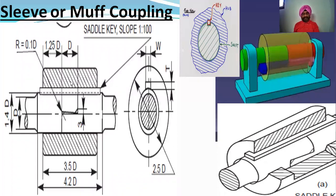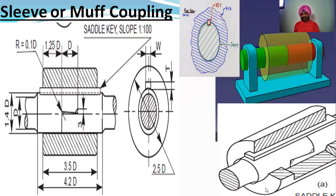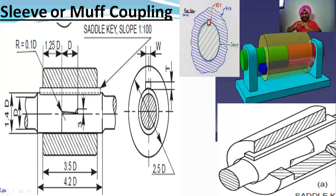We will explain step by step how to draw the muff coupling. First, this is the shaft. In the middle is the key, shown as a rectangle. This is the slope — which is the hub. The shafts are cut between the two sides, the same way on each side.